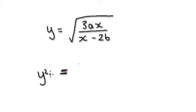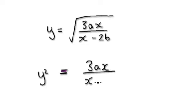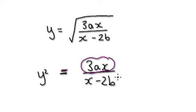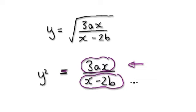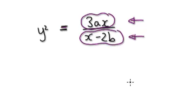Square both sides. So you have this, and then over here you have ax, whatever — x minus 2b. Visualize as this: a bubble dividing by this bubble here. Here you've got two layers, so times by the bottom layer just to get it onto one layer. Times both sides by this bottom bubble here.